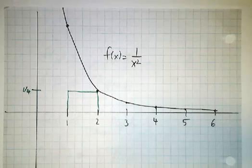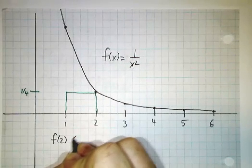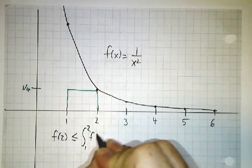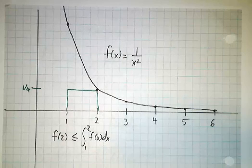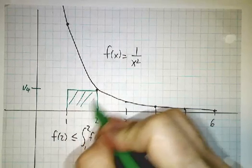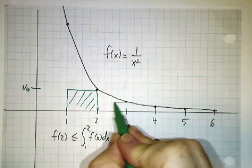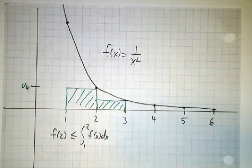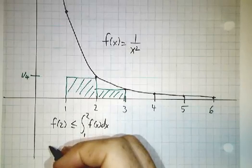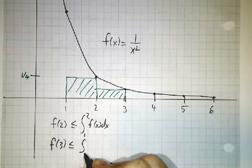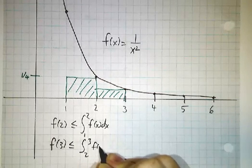So we get that f(2) is less than or equal to the integral from 1 to 2 of f dx. And then for the next box, we're going to start off with f(3). We're going to use right endpoints. So f(3) is less than or equal to the integral from 2 to 3 of f dx.